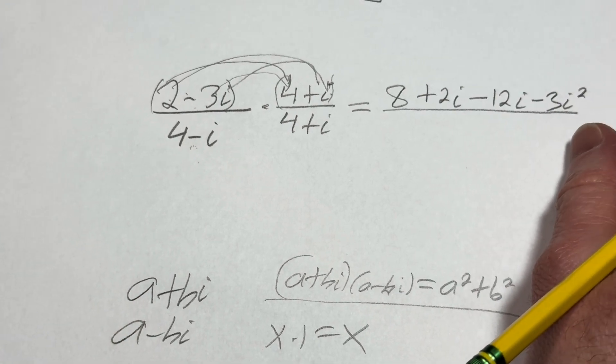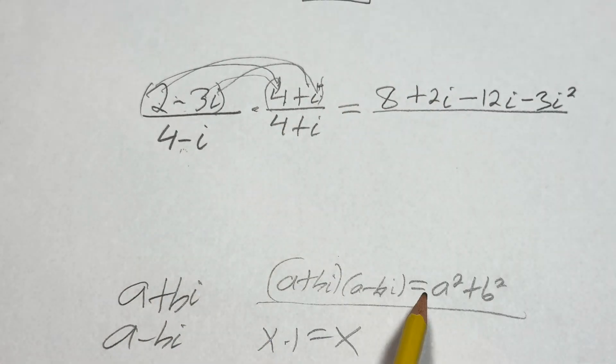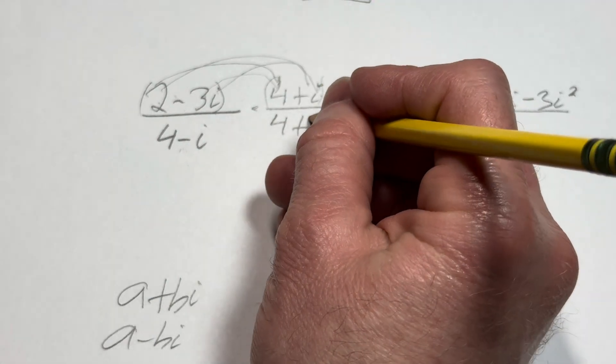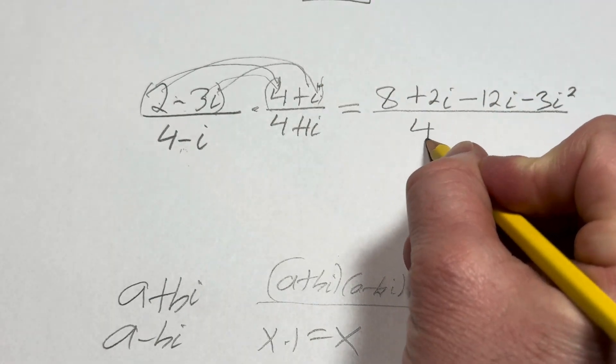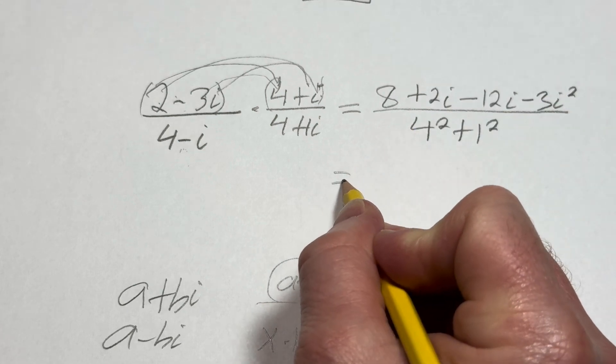And then we have the denominator. So here we're going to use this formula. And so there's a 1 here in front of the i. So this will be 4 squared plus 1 squared.